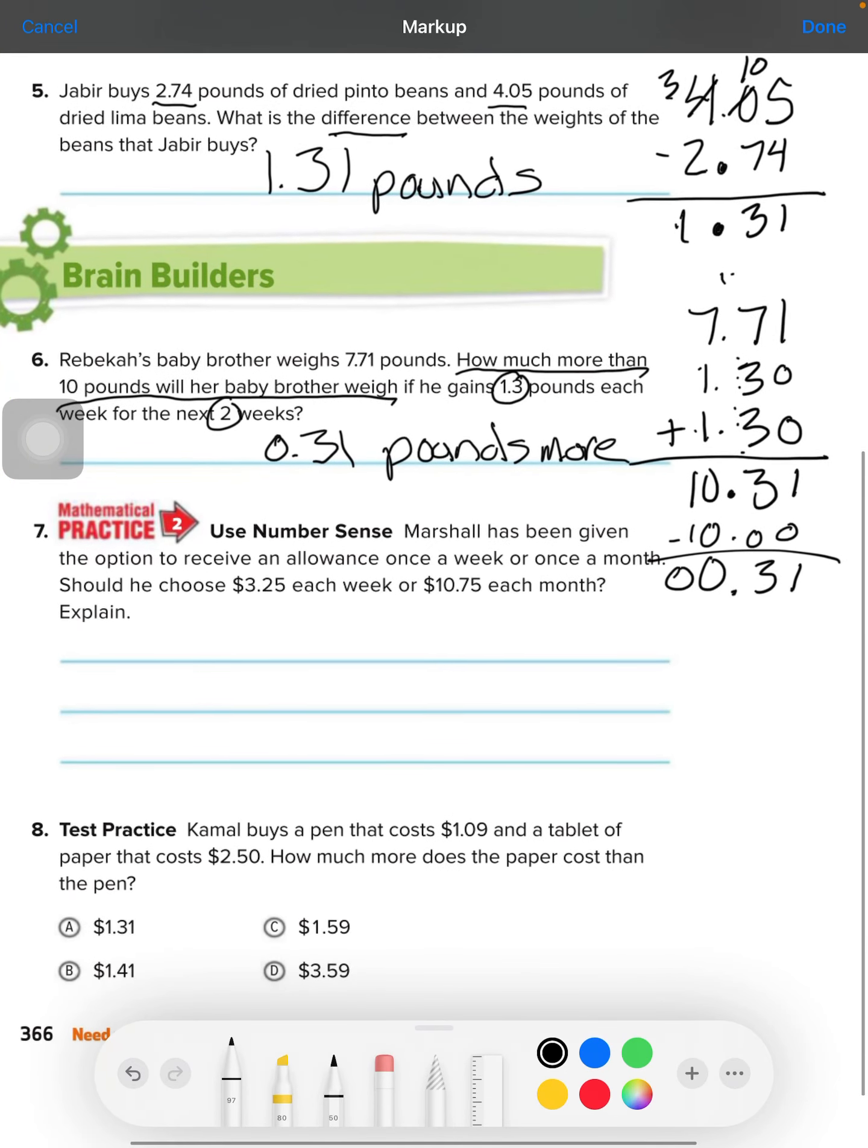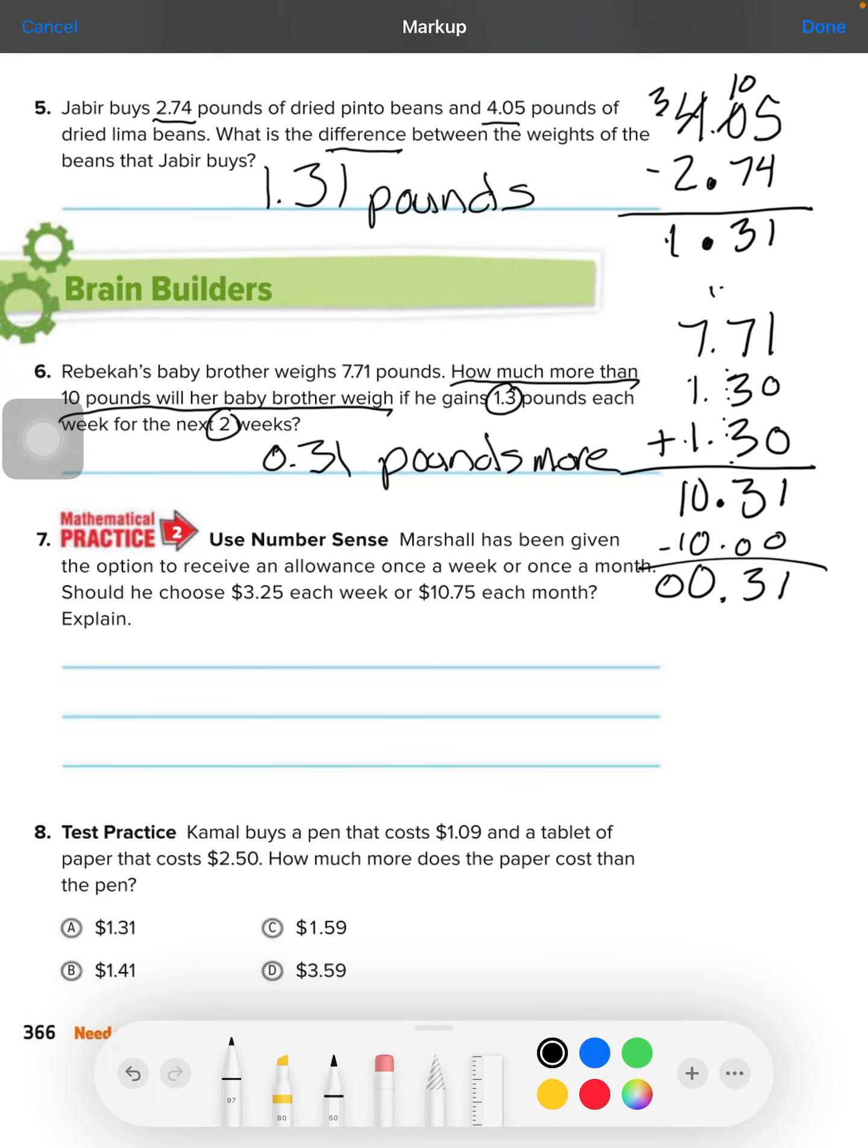Whew. That was a brain booger. Number 7, Marshall has been given the option to receive an allowance once a week or once a month. Should he choose $3.25 each week or $10.75 each month? Let's explain. So, which one can he receive more?